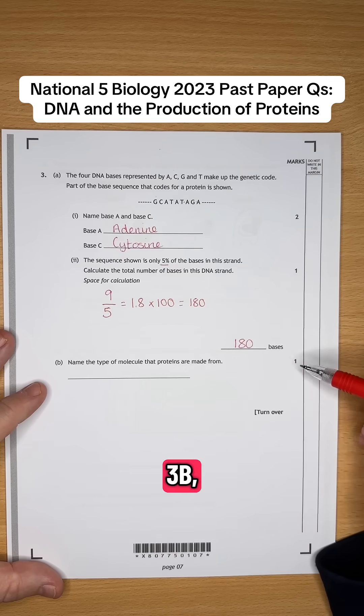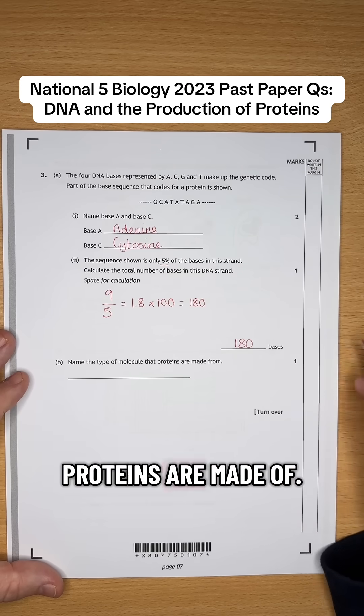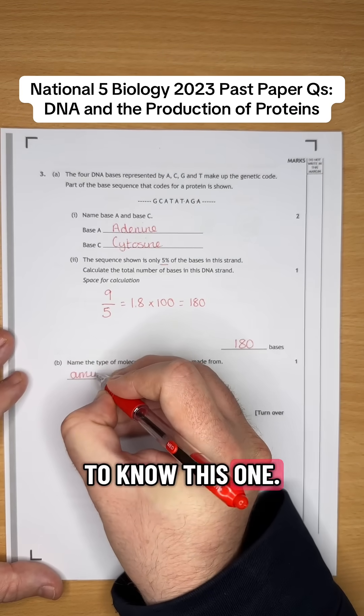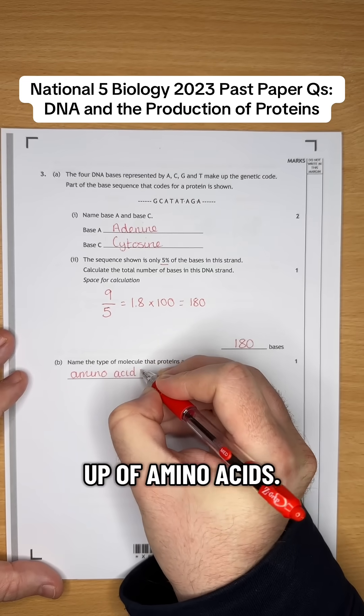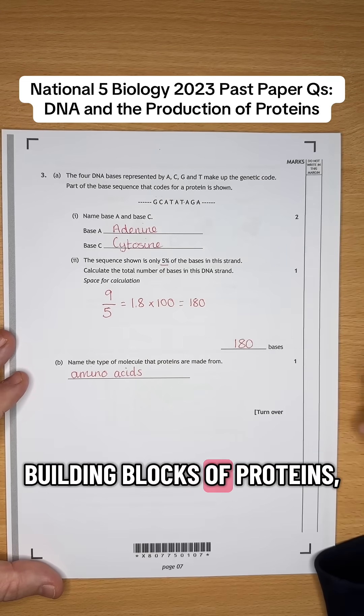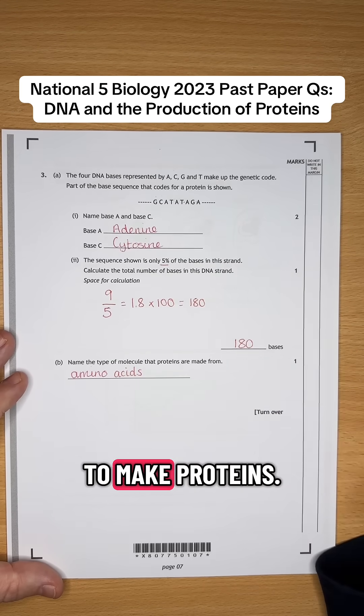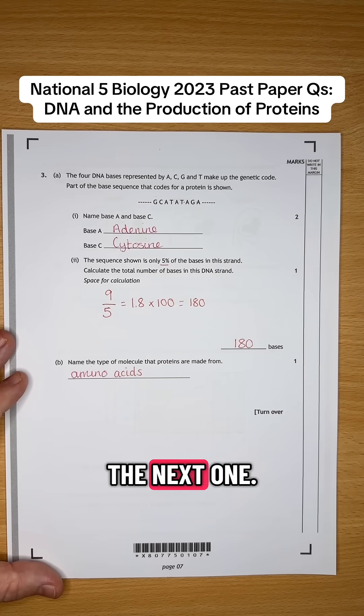And lastly, name the type of molecule that proteins are made of. Again, this is a straightforward knowledge question. Proteins are made up of amino acids. They are the building blocks of proteins, and they are built up via a synthesis reaction to make proteins. Hope that helps. See you in the next one.